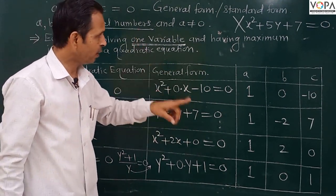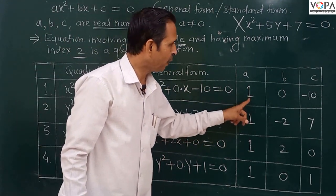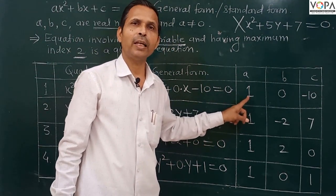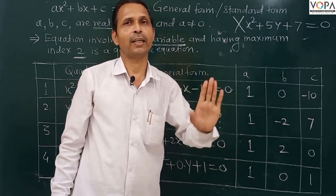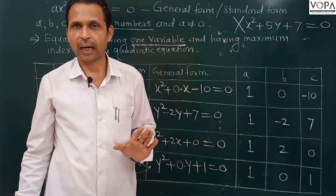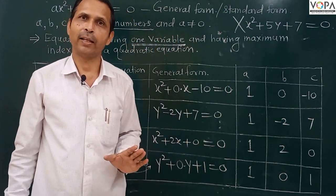In this way, for any equation we must first write it in the general form, and after that we can identify the values of a, b, and c.